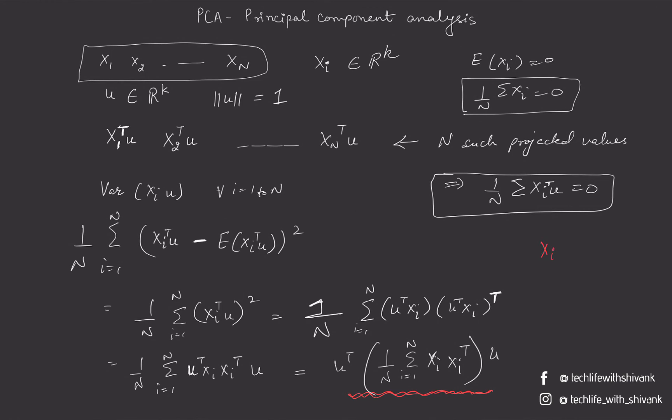So xi is of size k by 1, xi transpose would be of size 1 by k. We would be having n such matrices, and we would be taking the average of all those n matrices. The resulting matrix that we obtain, let's denote this by capital Sigma.